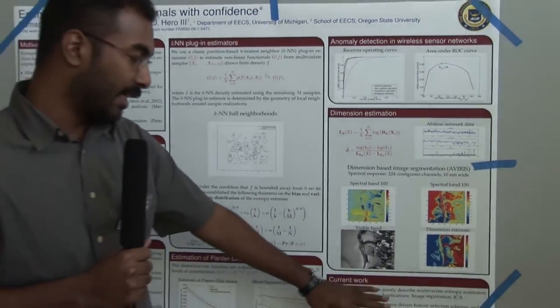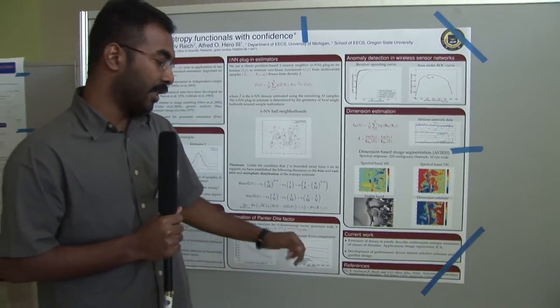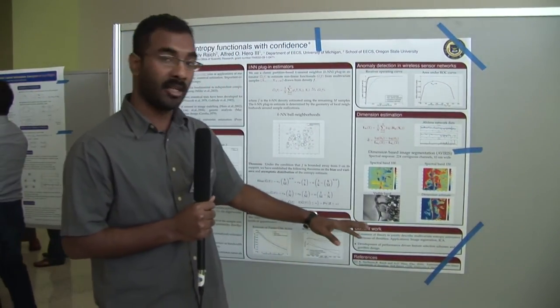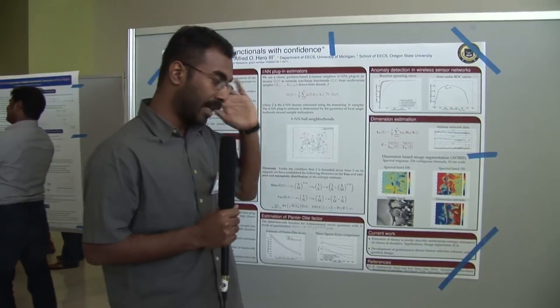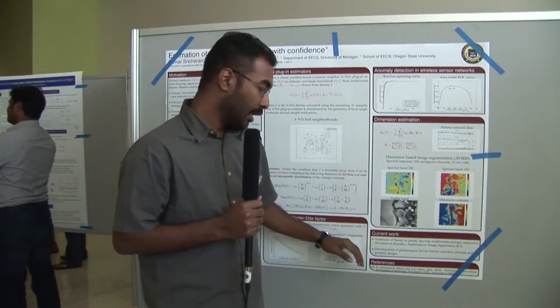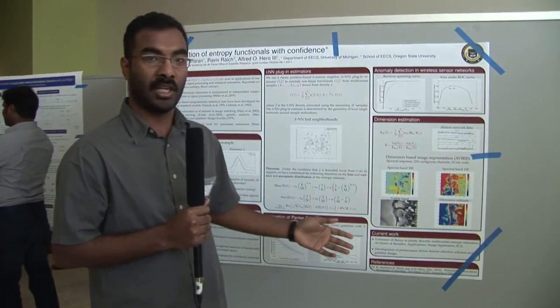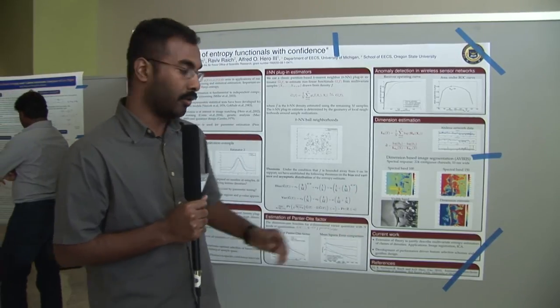I'm currently looking at extending my theory to jointly describe multivariate entropy estimators. The applications are image registration and ICA, and also driving feature selection and algorithm design for improved performance.